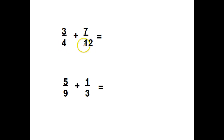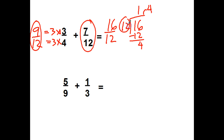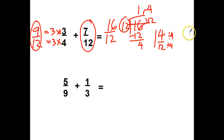4 is the smaller denominator. Can I take it times something to equal 12? Yep, 4 times 3. So if I'm taking the bottom times 3, I'm taking the top times 3. 3 fourths is really the same as 9 twelfths. 9 twelfths plus 7 twelfths gets me 16 twelfths. 16 divided by 12 goes 1 time with a remainder of 4. So I'm at 1 and 4 twelfths. However, I can simplify this — besides them both being even, I notice I can divide them both by 4. 4 divided by 4 gives me a 1. 12 divided by 4 gives me a 3. Remember the whole number part is coming over. So I'm at 1 and 1 third.